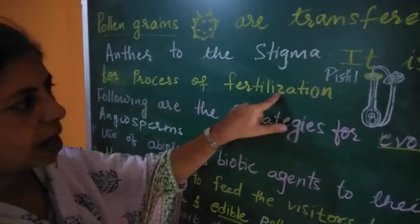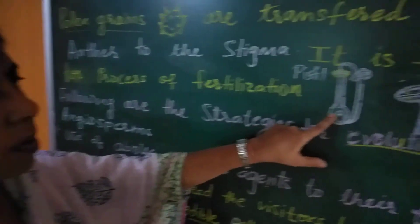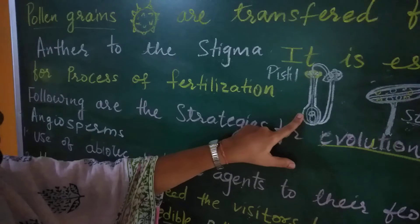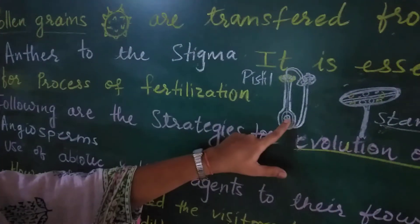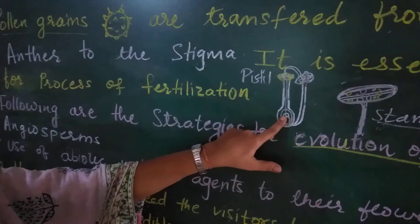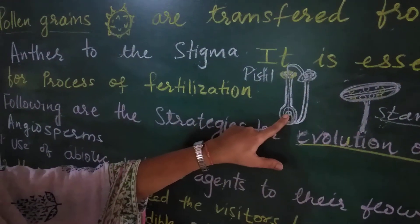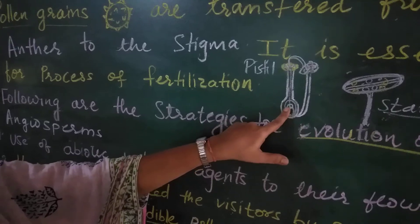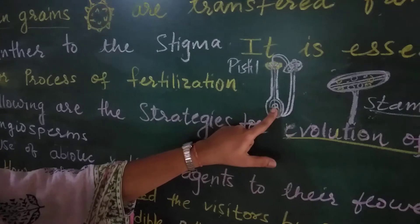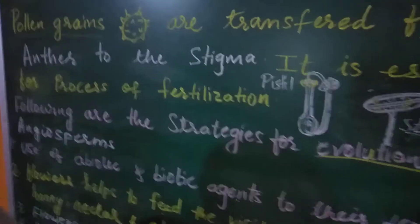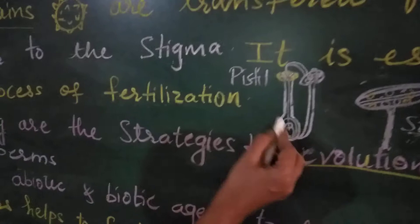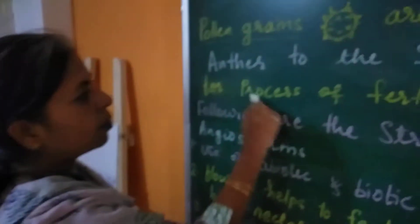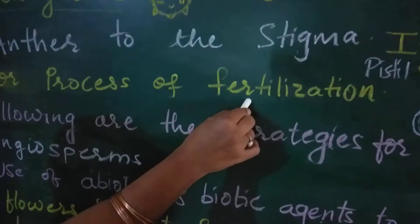After fertilization, a fruit is produced. Inside the fruit, seeds are produced, and these seeds produce new plants. So pollination is essential for the process of fertilization.